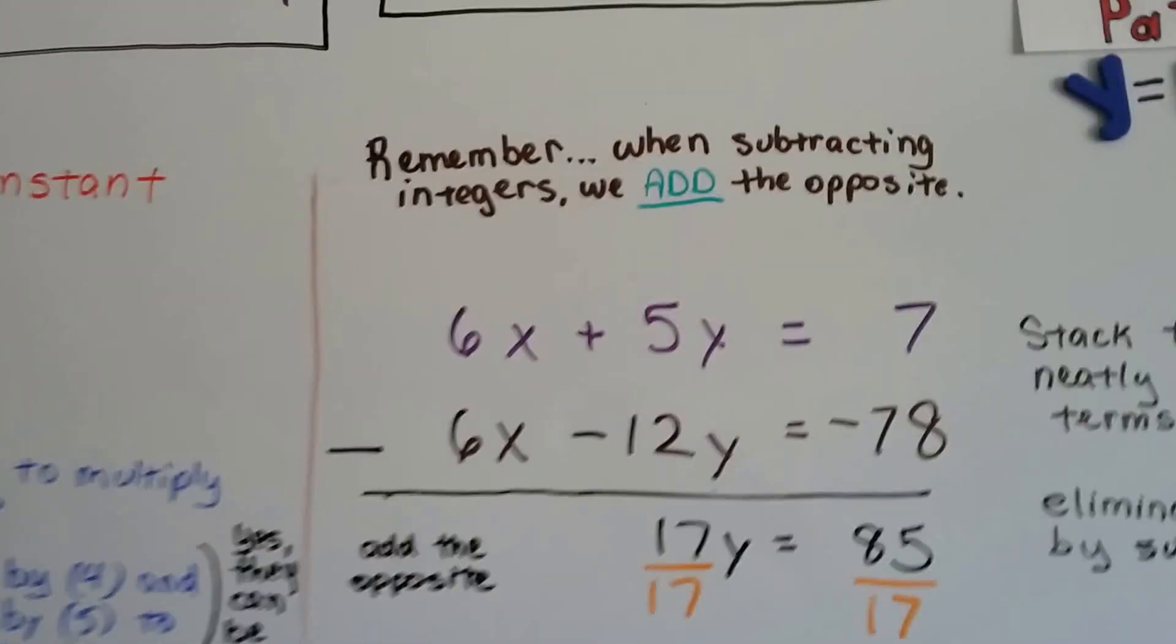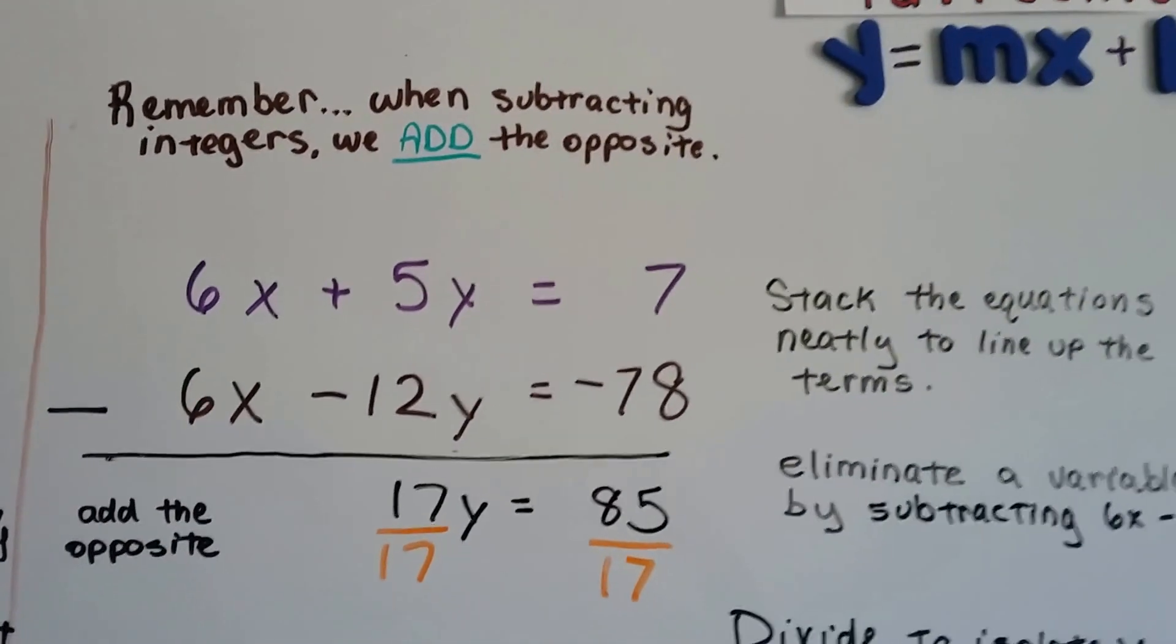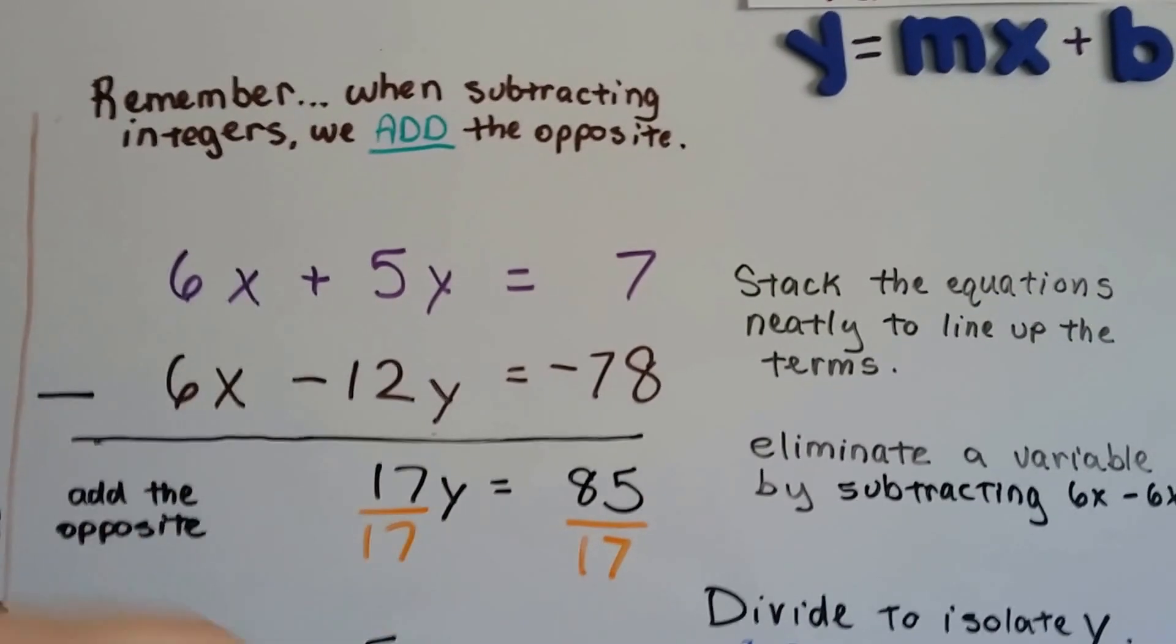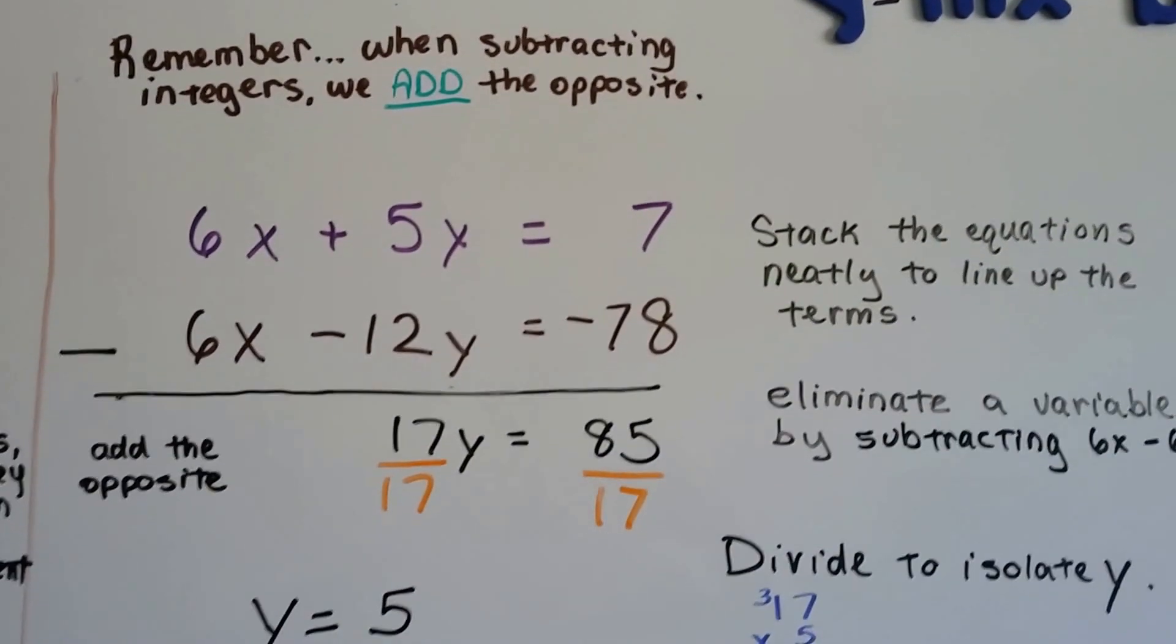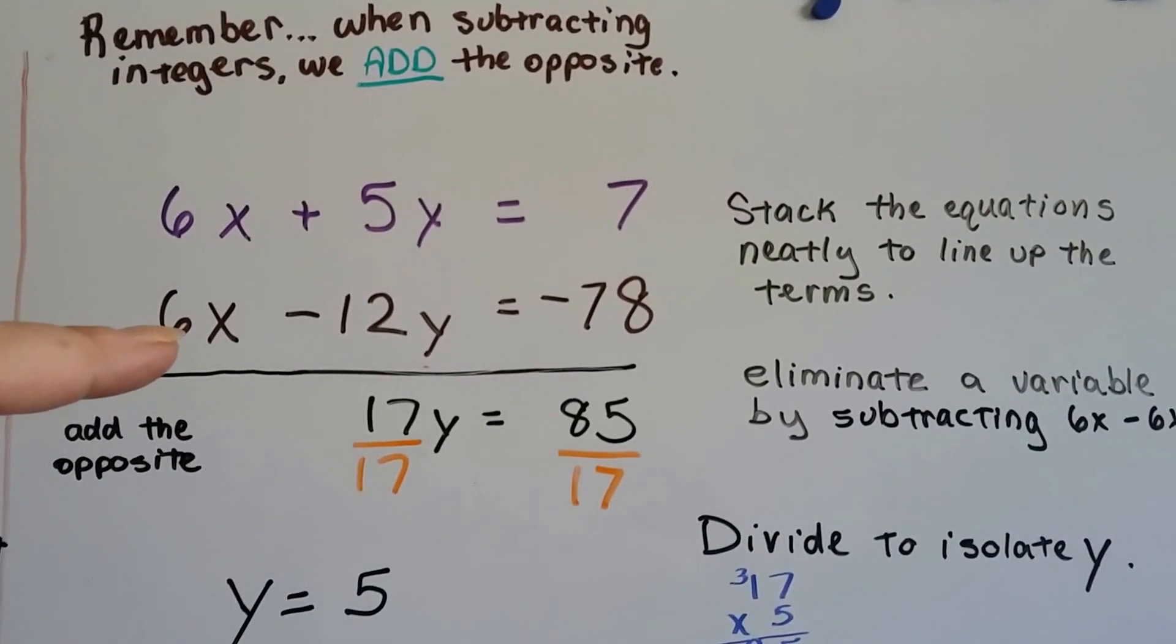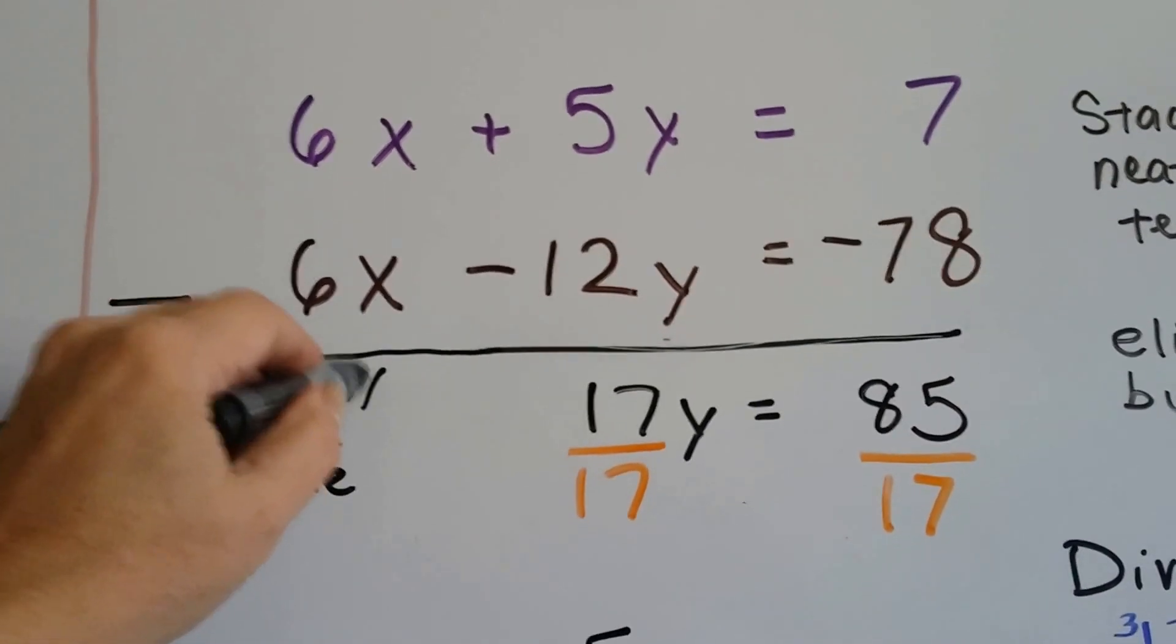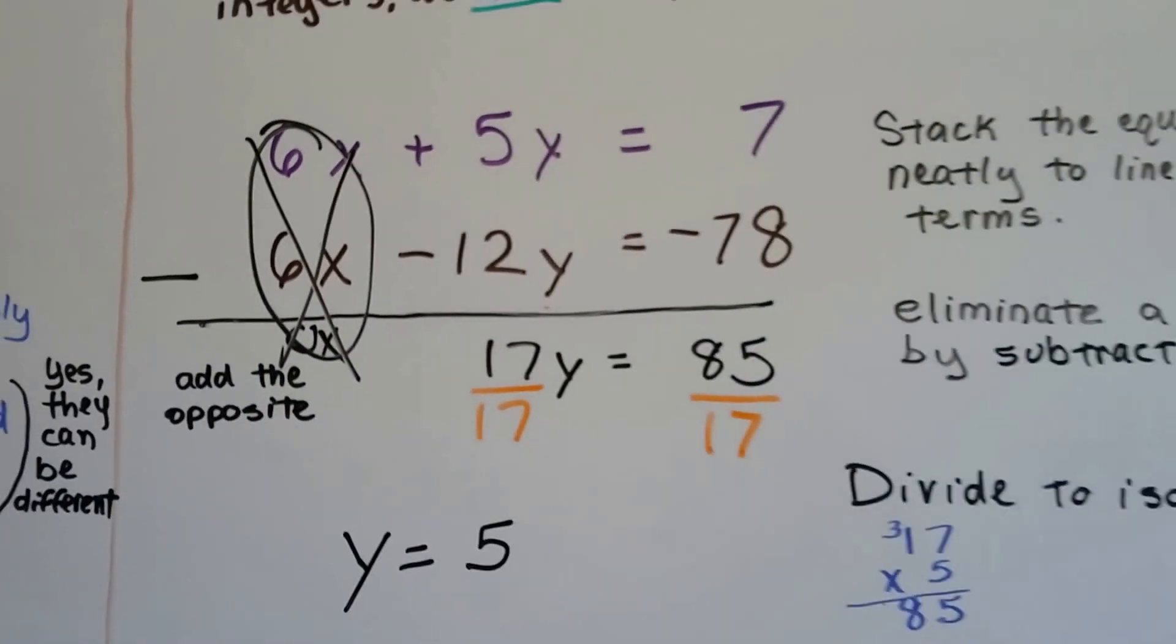So, remember when we're subtracting integers, we add the opposite. So we stack our equations very neatly with the terms above each other, all lined up nice and neat, and we add the opposite. We've got a positive 6x take away a positive 6x. That's going to make 0. So we've got 0x here. So that's gone, because we don't need to write 0x.